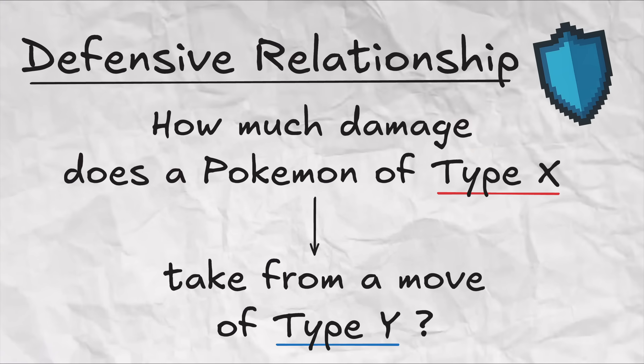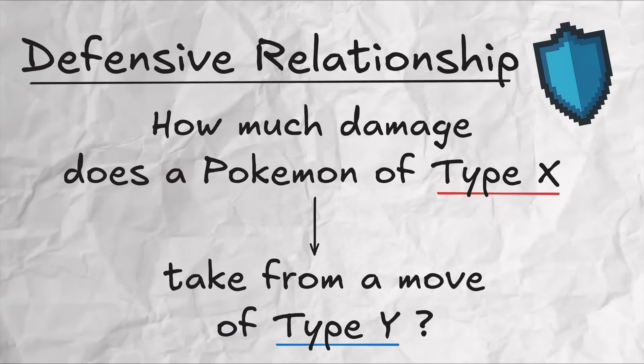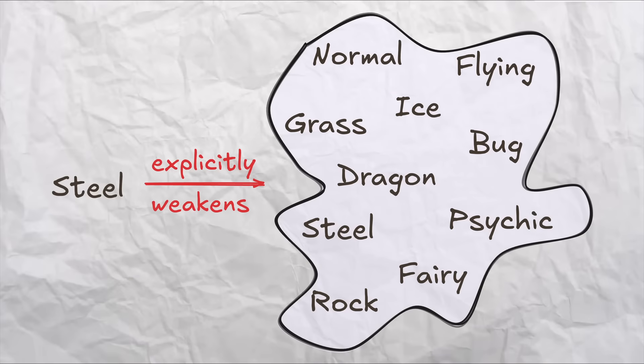What we really want is an approach that explicitly takes into account defensive relationships, i.e. resistances, alongside those offensive relationships.